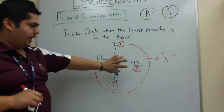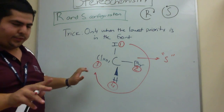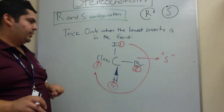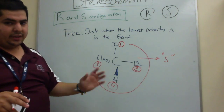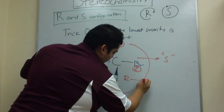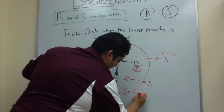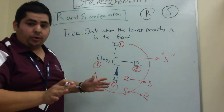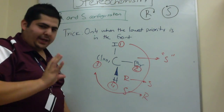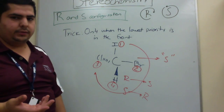You only do this whenever hydrogen or your lowest priority is in the front. If it's in the plane, don't mess with it. If it's in the back, don't mess with it — only when your lowest priority is in the front. All you have to do is invert the stereochemistry: if it's R, it becomes S; if it's S, it becomes R. This is going to save you so much trouble, because rotating the molecule may be difficult for many students.